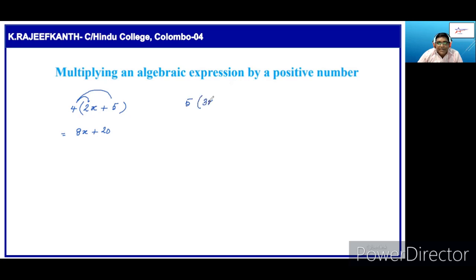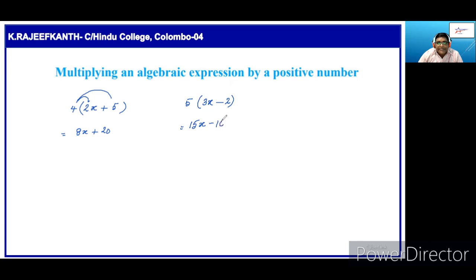Here, one more example: 5 into 3x minus 2. So, we have to multiply by 5 both terms of this expression. Then, 3x into 5 is 15x. Then, minus 5 into 2 is 10. So the answer is 15x minus 10.